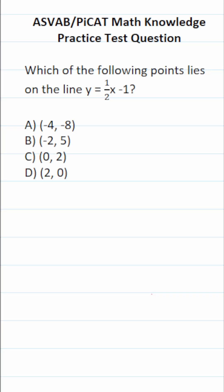This math knowledge practice test question for the ASVAB and PiCAT asks which of the following points lies on the line y equals one-half x minus 1. We're given the equation of the line y equals one-half x minus 1, and we want to determine which of these points is in fact on this line.